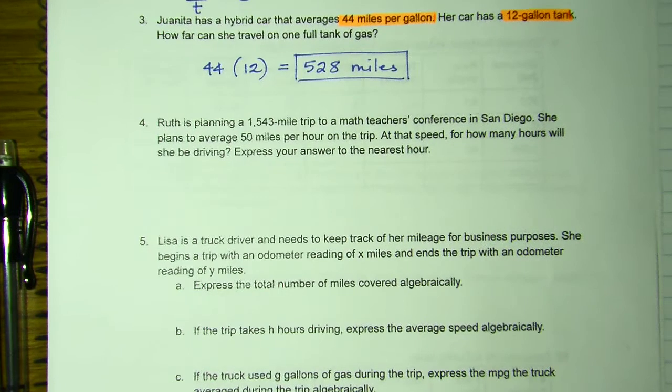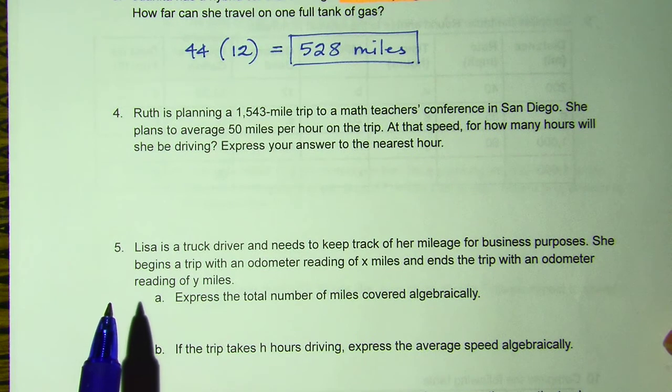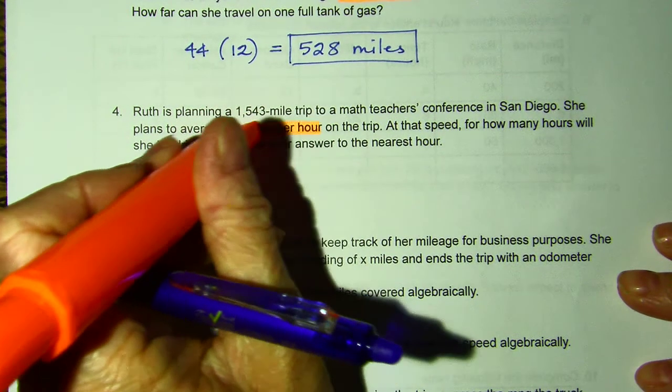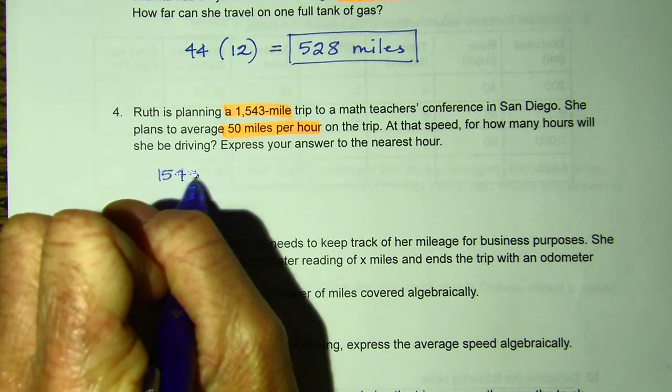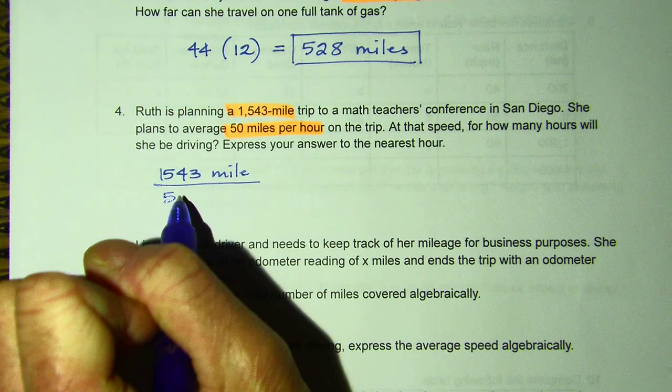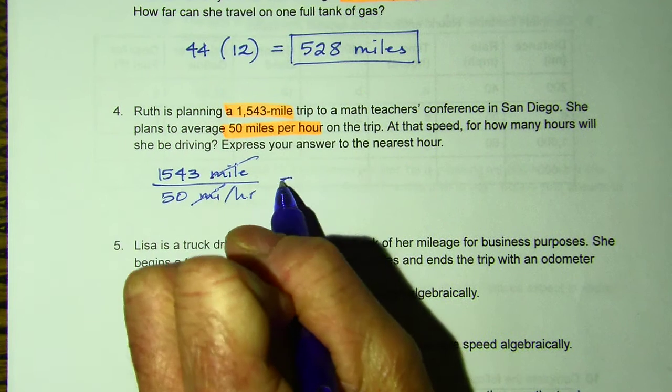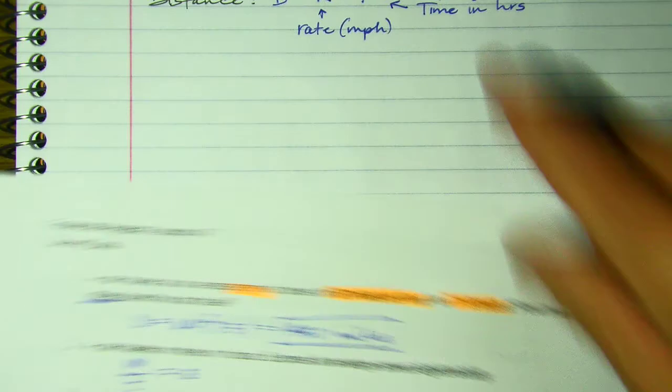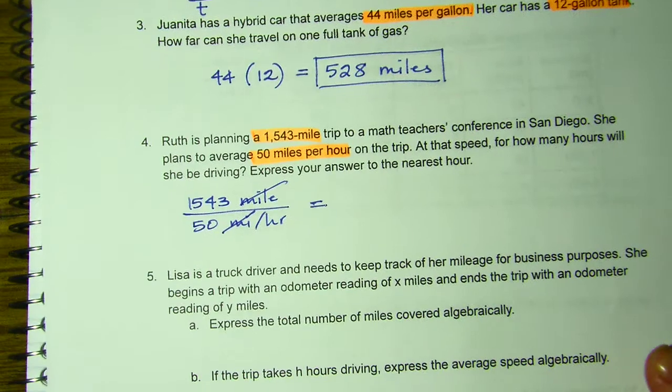Ruth is planning a 1,543-mile trip to a math teacher's conference in San Diego. She's wanting to travel 50 miles per hour. So she is planning a 1543-mile trip, she's traveling 50 miles per hour. The miles cancel, and that will give me total time.